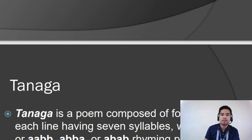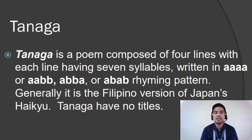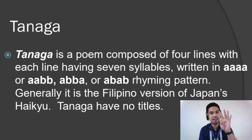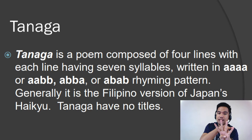The first conventional form of poetry that we are going to talk about is what we call the Tanaga. Tanaga is a poem composed of four lines, with each line having seven syllables. Again, each line has seven syllables, and this is a one-stanza poem having four lines — one, two, three, four lines with seven syllables per each line.